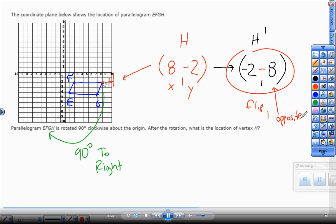So negative 2 switched, 8 became opposite, so the new point for H after a 90 degree quarter turn is left 2, down 8. Again, this whole thing quarter turn to the right: flip it, make the right one opposite. The fourth word is 'all'.